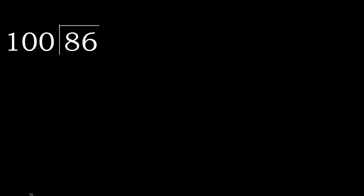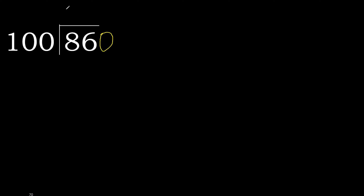86 divided by 100. 8 is less, therefore next. 86 is less, therefore next. There is no number, therefore complete. Always complete with 0 here. 0 point.